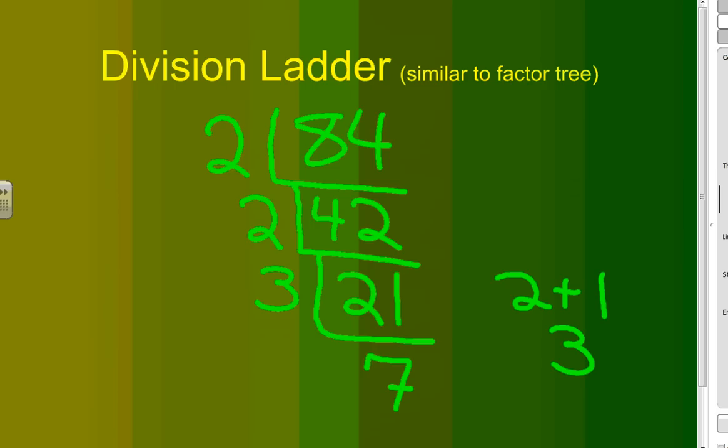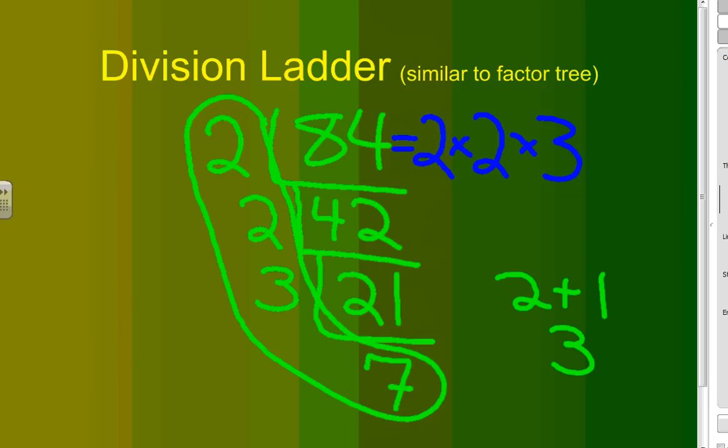Now, I look at my last number, and I realize immediately that 7 is a prime number. Therefore, all of the numbers on the left side are prime numbers. And together, they will make my prime factorization, using the ladder method. So, 84 equals 2 times 2 times 3 times 7.